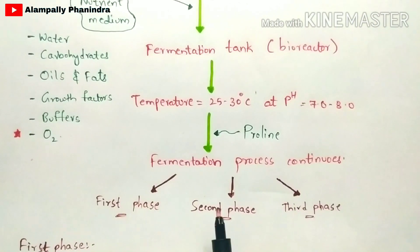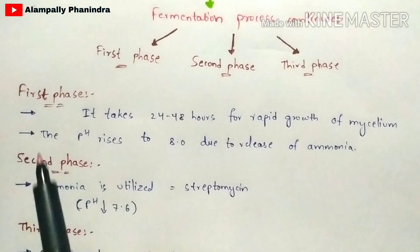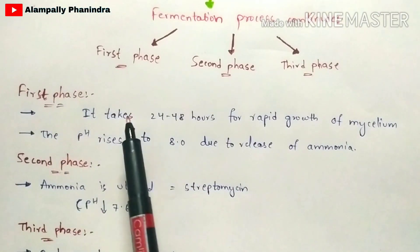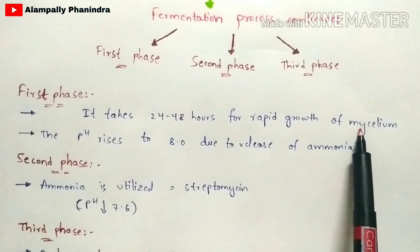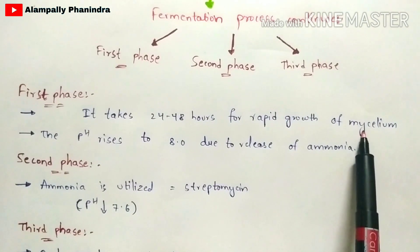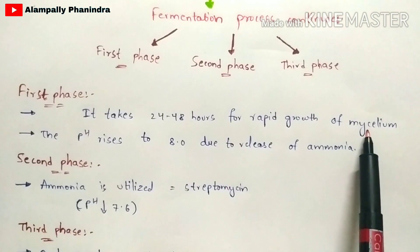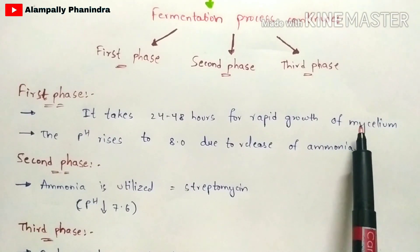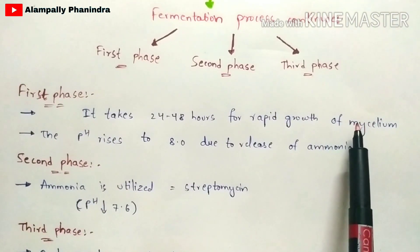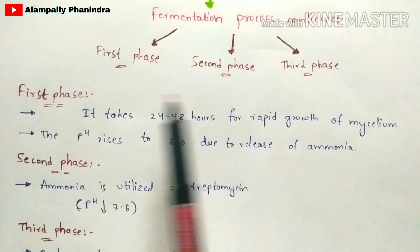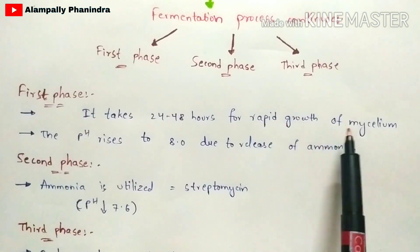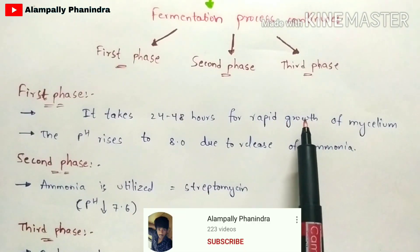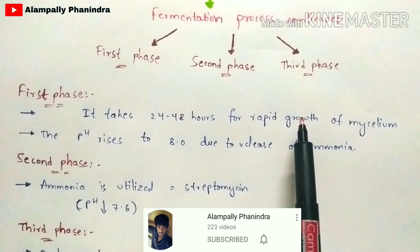The fermentation process consists of three phases: first phase, second phase, and third phase. In the first phase, it takes 24 to 48 hours for the rapid growth of mycelium. Mycelium refers to the Streptomyces griseus bacteria responsible for streptomycin production. In this phase, the number of mycelium increases through cell division.